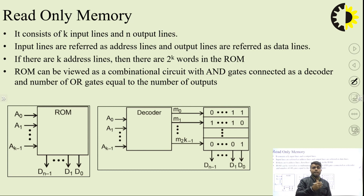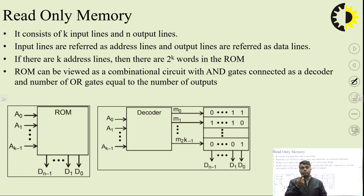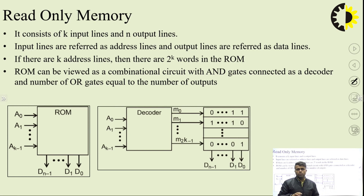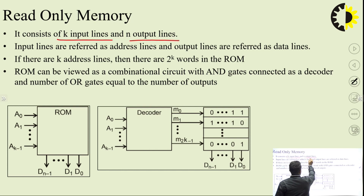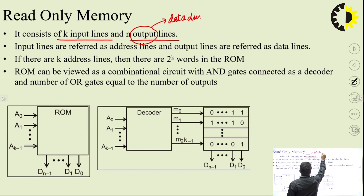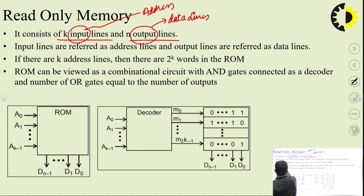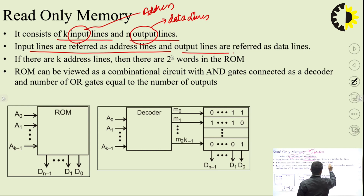If there are 10 houses, we need address lines to decode which address we are referring to. By placing data on the address lines, we reach a particular address — similar to a multiplexer, where placing a particular value on the select line selects one input to reach the output. In a ROM or programmable logic device, we specify an address and what data to place on it. It consists of k input lines (address lines) and n output lines (data lines).